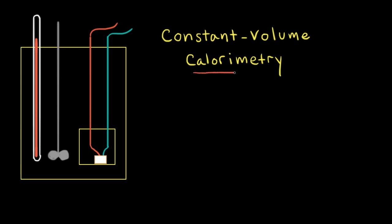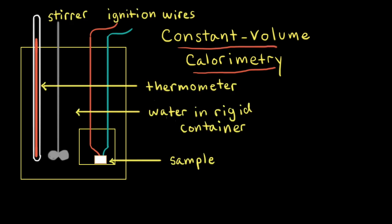Calorimetry refers to the measurement of heat flow, and there are many different types of calorimeters. In this case, we're looking at a constant volume calorimeter, which is also called a bomb calorimeter. Let's look at how a bomb calorimeter works.